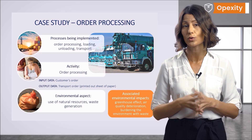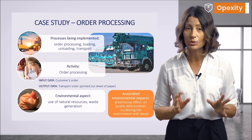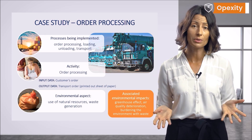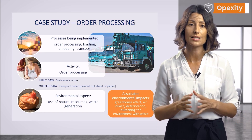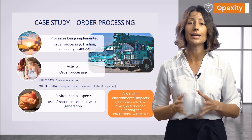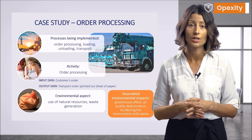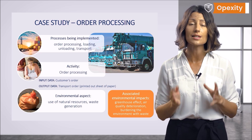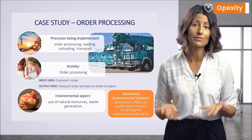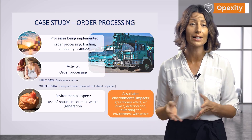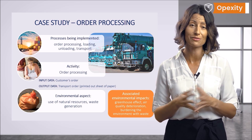Now pause and try to write down the environmental aspects and related impacts for loading and unloading activities on your own. Remember that the suggested input and output method is not obligatory — it should be perceived as a best practice for identifying environmental aspects and related impacts, which will ensure that we analyze our organization's activities in a comprehensive and complete manner in terms of its relationship with the environment.